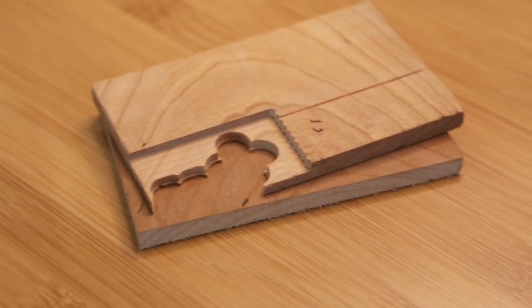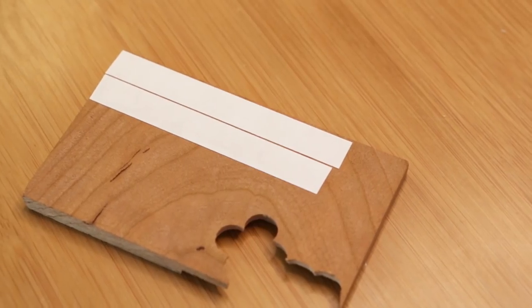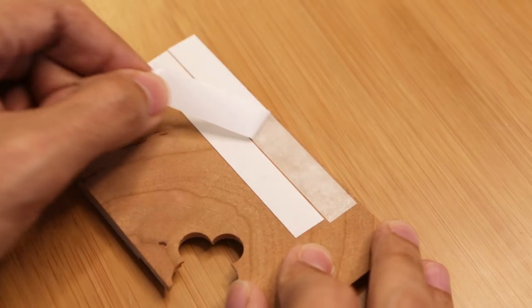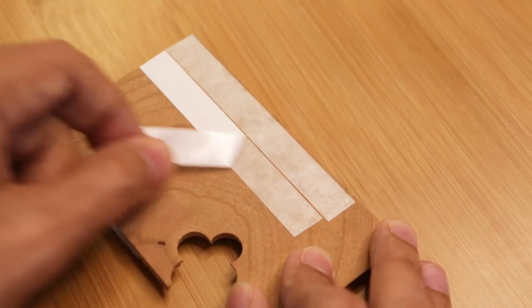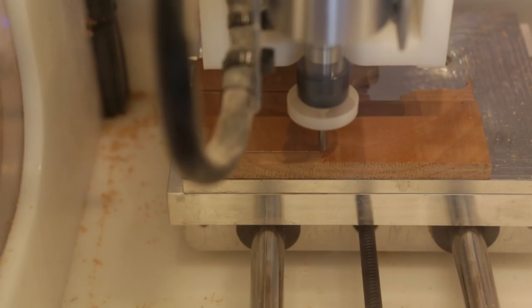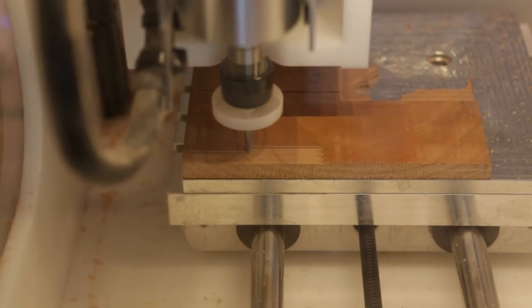For the buttons, I wanted to try out some cherry wood. I think this gives the case some color separation. Again, I'm using Nitto tape to secure the stock to the bed of the OtherMill. This was a lot easier to set up since the buttons are pretty simple.